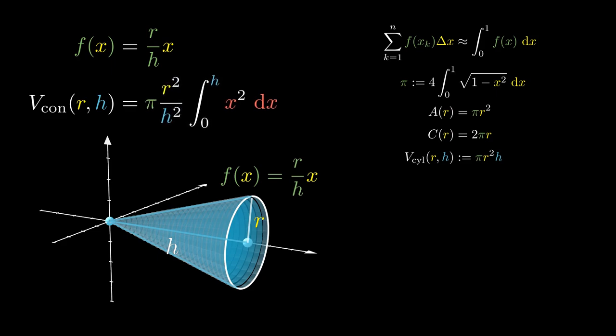We can evaluate the integral in x as h³/3. For details, check out the document in the description box below. Doing some algebra gives us 1/3 times πr²h. This is the volume of a cone with base radius r and height h.